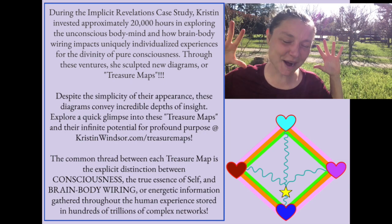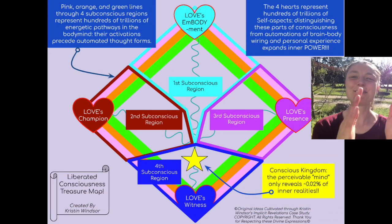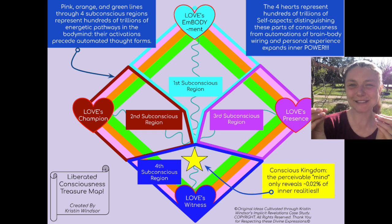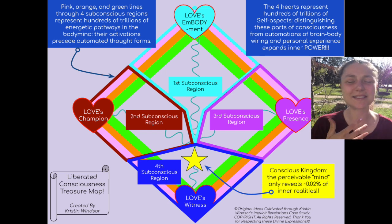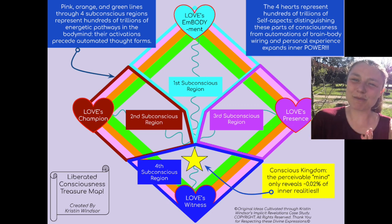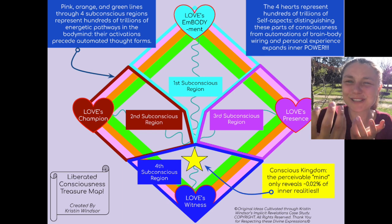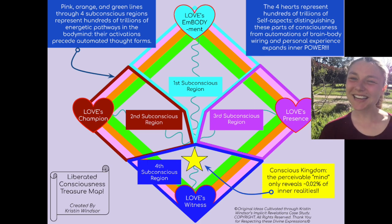It's amazing to take these complex concepts of hundreds of trillions of energetic pathways and simplify them through four regions with very specific energies — to differentiate who the self is from the body-mind wiring within an experience, and to have more power to expand awareness, to transform what's happening, and to be there for parts of ourselves as it's happening.